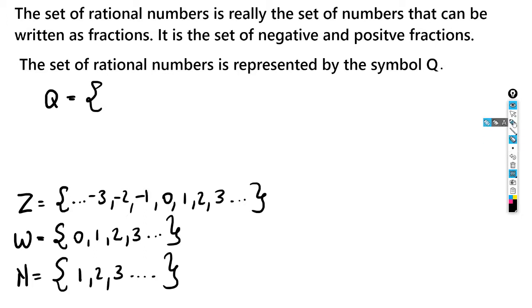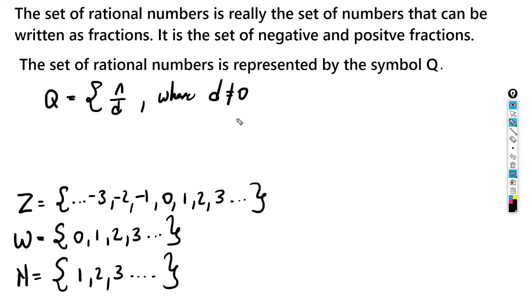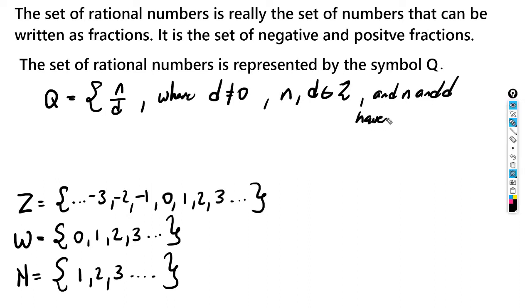To cover all these options, we write Q as the set of all numbers n/d, where d is not equal to 0 — because a denominator of 0 gives an undefined number, which is not rational — and where n and d are elements of Z (the integers), and n and d have no common factor.